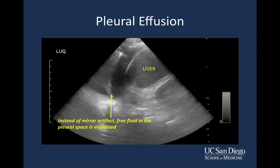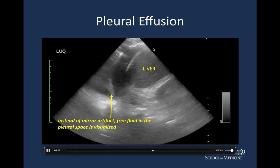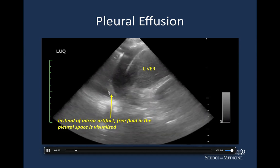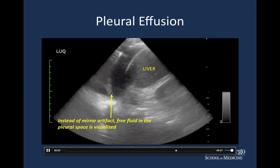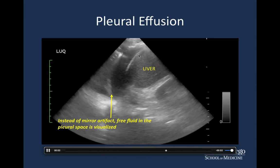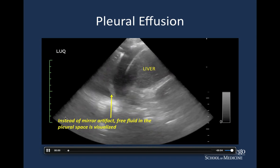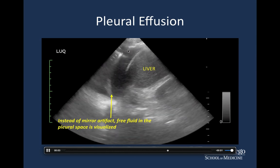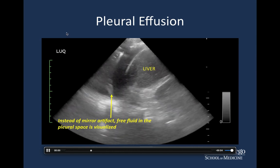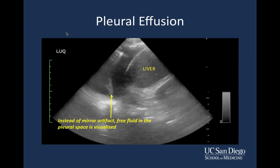Here's another example of a pleural effusion. You can see the liver, the diaphragm, and a little bit of atelectatic lung just floating in a large fluid collection. It's very important to notice that this fluid collection is above the diaphragm, not below — so you're looking at pleural fluid as opposed to peritoneal fluid. Instead of mirror artifact above the diaphragm, you see free fluid in the pleural space. If you don't see mirror artifact, ask yourself why — there's probably some pathology there.